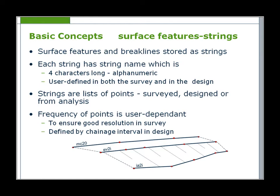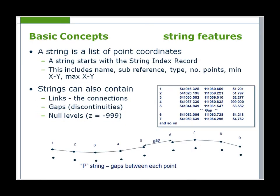Strings are a list of points. They can be surveyed, designed, or created from analysis, and frequency of points is user dependent to ensure good resolution in the survey, or defined by change interval in a design. A string is a list of point coordinates and all points are joined by links unless there is a gap or discontinuity. A gap could be inserted on a string where there is a break in a fence line.